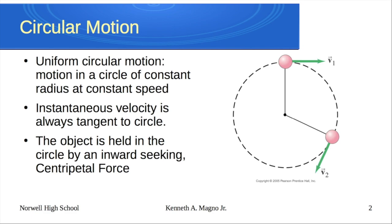Where this comes from is if we go back to Newton's first law. Newton's first law told us that objects like to stay in motion in a straight line at constant speed unless acted on by an outside force. Up until now, the forces we've been dealing with were always changing the speed. Now the centripetal force is going to be changing the direction.